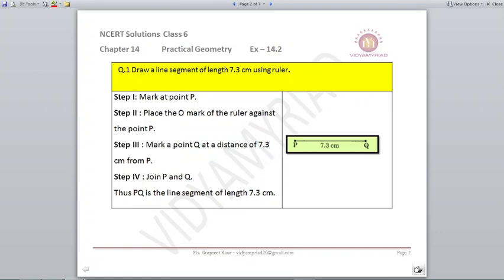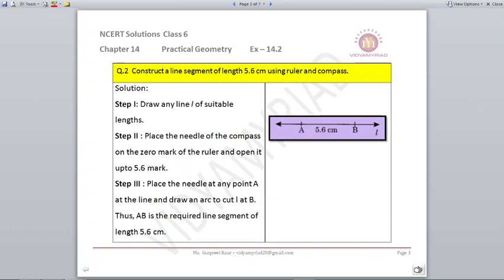So ruler means you will take a scale, mark a point P anywhere on your sheet, and then using scale you will just mark 7.3 centimeters. You can name the other end as Q, join PQ. That will be your required line segment 7.3 using ruler.